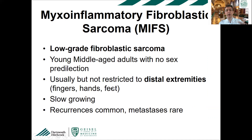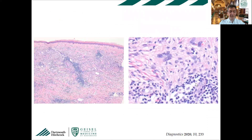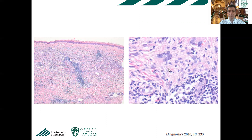It is slow-growing; recurrences are common but metastases are rare. It can be difficult to diagnose on superficial biopsies. You see a mix of hyaline and collagenous zones with a multinodular appearance, and bizarre atypical spindle to epithelioid cells resembling Reed-Sternberg cells with prominent nucleoli and irregular nuclear contours. Characteristically it has a prominent inflammatory cell infiltrate — that is a key feature to think about myxoinflammatory fibroblastic sarcoma, which can involve the dermis.